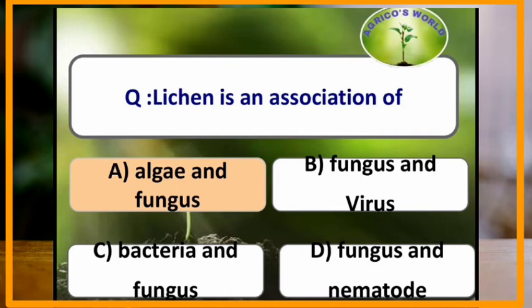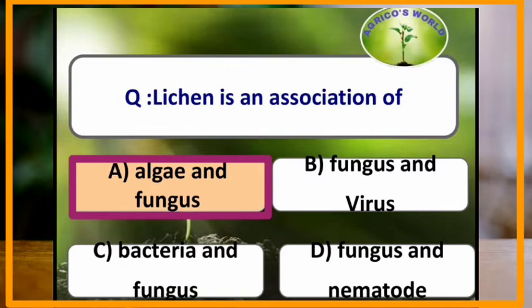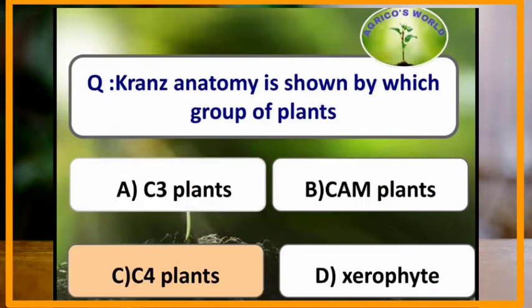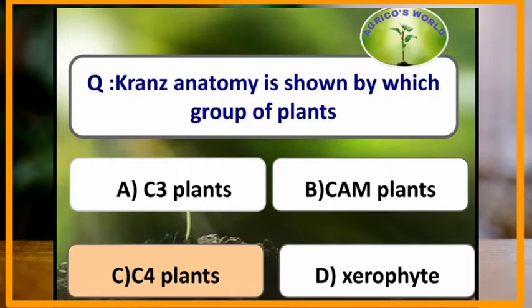Lichen is the association of algae and fungi. Kranz anatomy is shown by which group of plants? Kranz anatomy is shown by C4 plants.